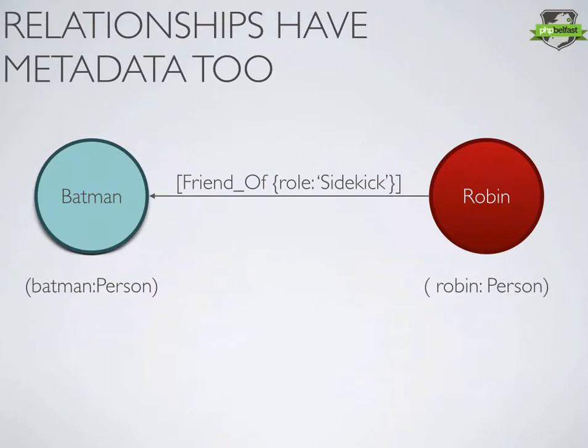The relationships between two nodes can also describe the nature of the relationship. So you've got 'friend of' — Robin is a friend of Batman — but not just a friend; we can further define that as a sidekick.